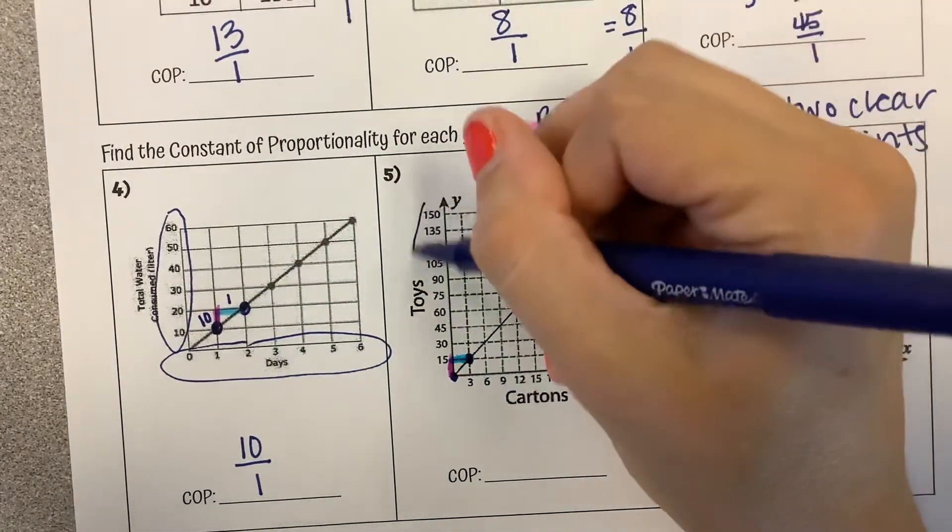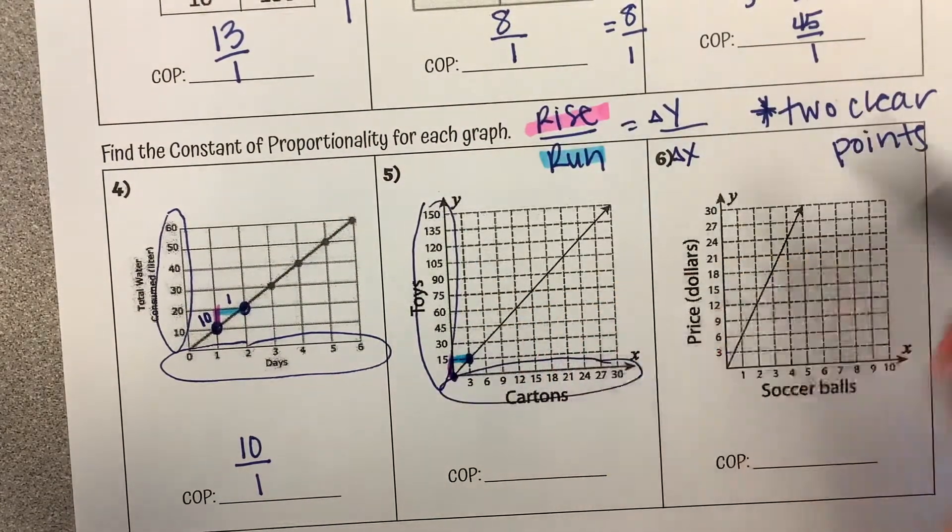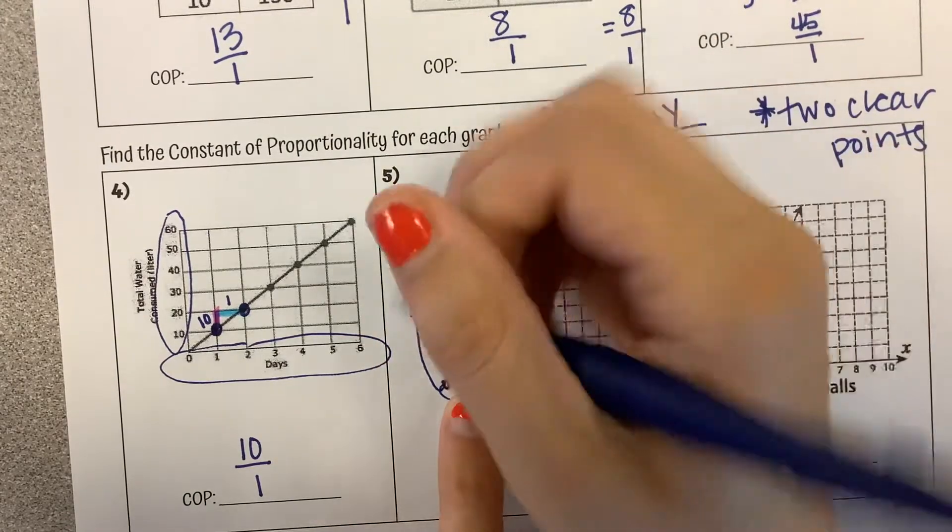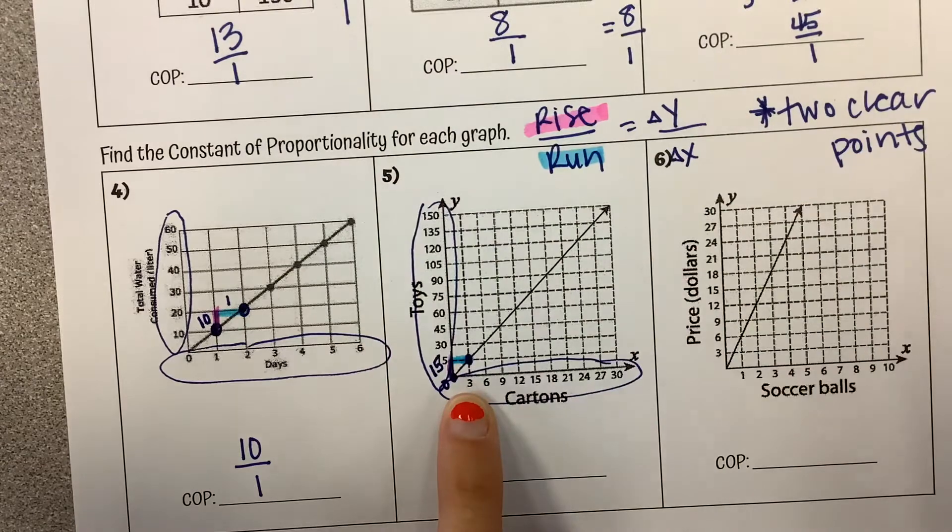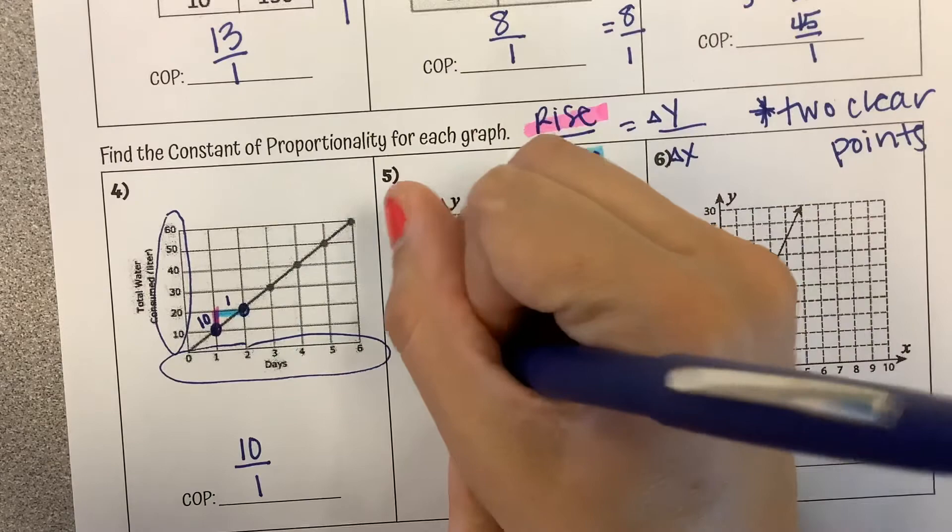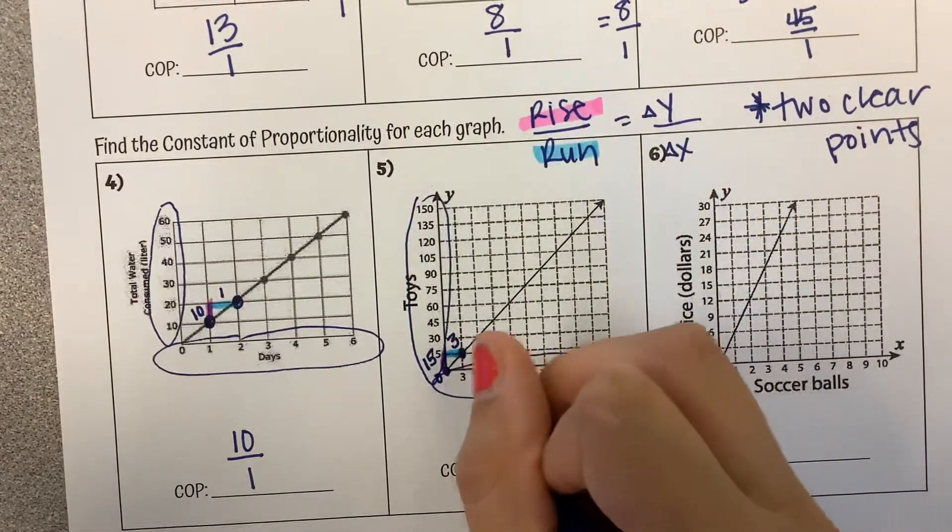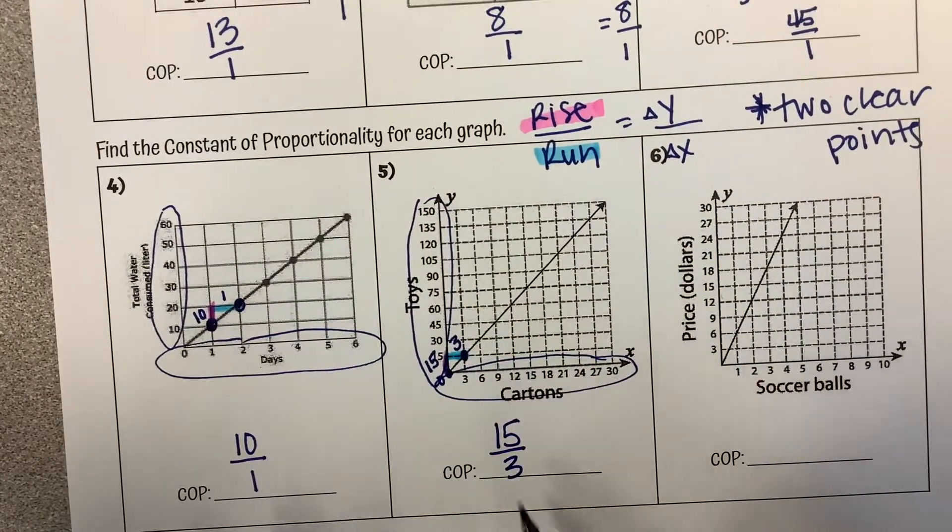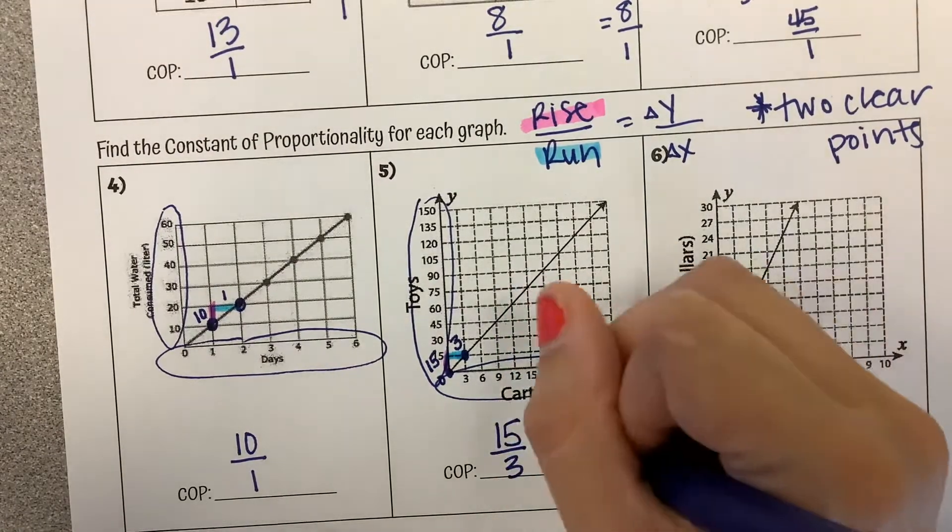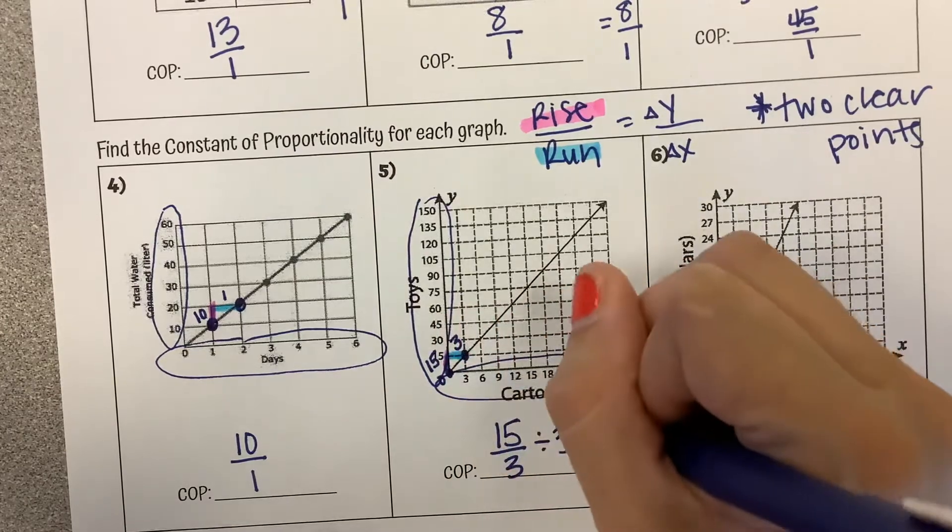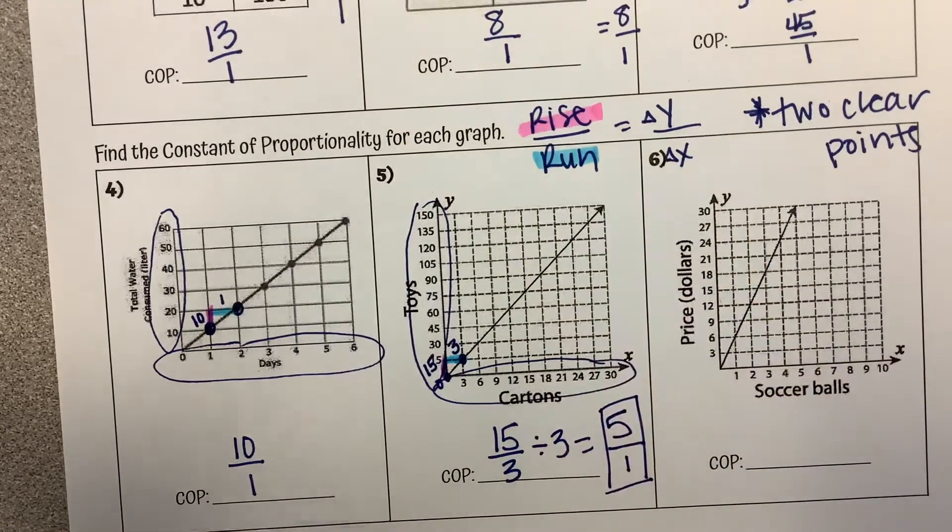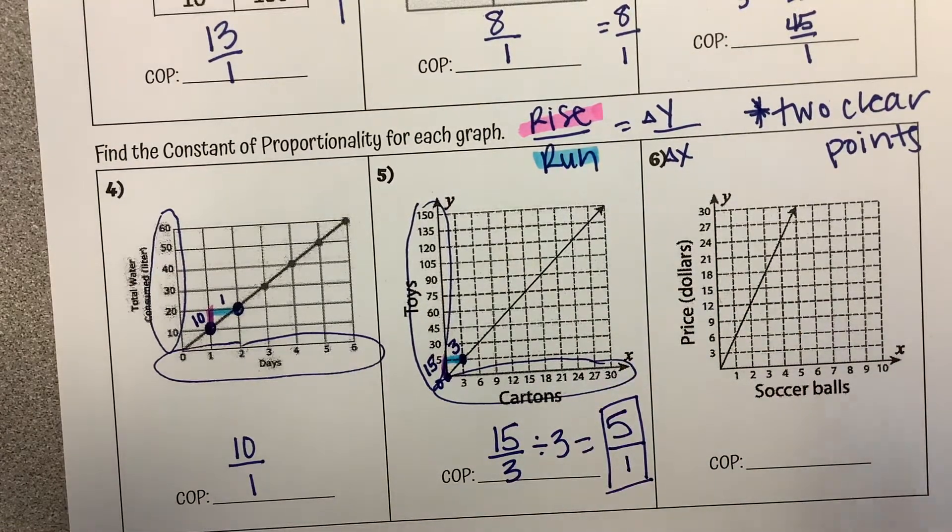Again, paying close attention to our axes. From here, this is at 0. Going up to 15 is a rise of 15. And then this way, going from 0 across is 3. So it is 15 over 3. This is not simplified, though. These can both divide by 3. 15 divided by 3 is 5. 3 divided by 3 is 1. So the constant of proportionality is 5 over 1.